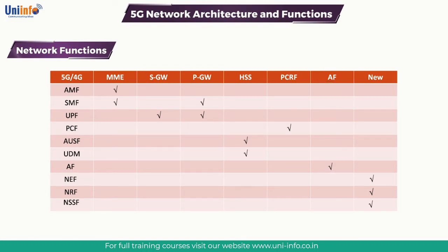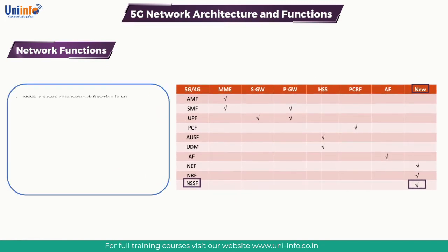NSSF is a new core network function in 5G. Its main functionality is to provide a required virtual slice of RAN, core, and transport networks. In the future, operators will build specific network slices depending on requirements, and the NSSF will have information about these different network slices including their definitions, resources, etc. The UE may be able to ask the operator to register to a different slice of the network and can request this while registering.